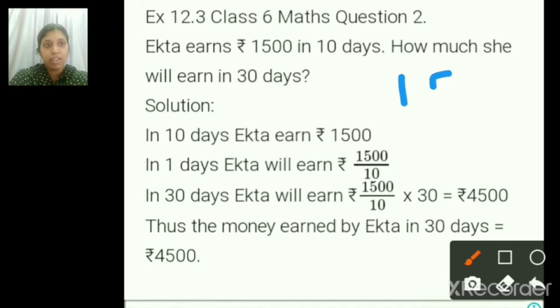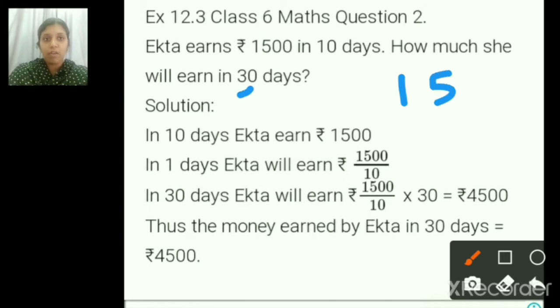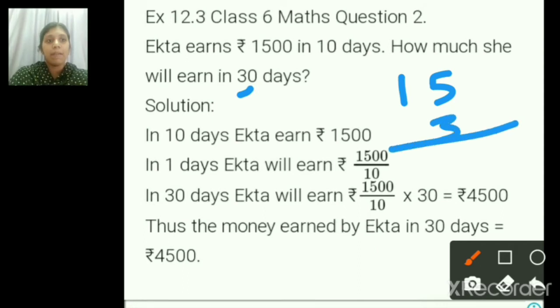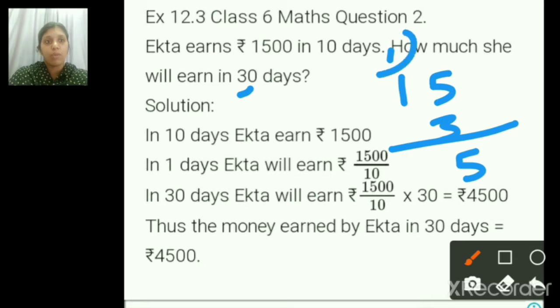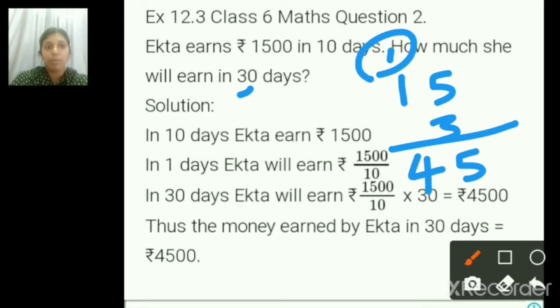So I am taking only 15. 30 also you are having 1 zero, take only 3. So when you multiply them: 3 fives are 15, carry over 1. 3 ones are 3, plus 1 is 4.